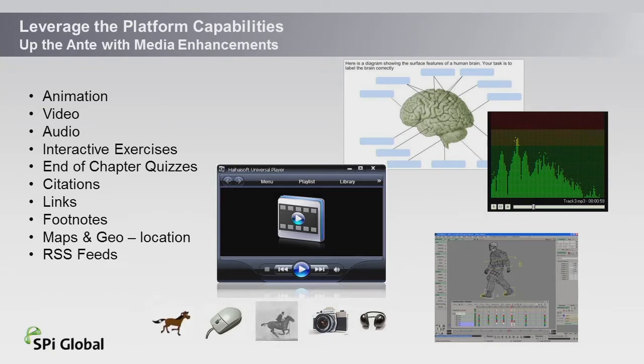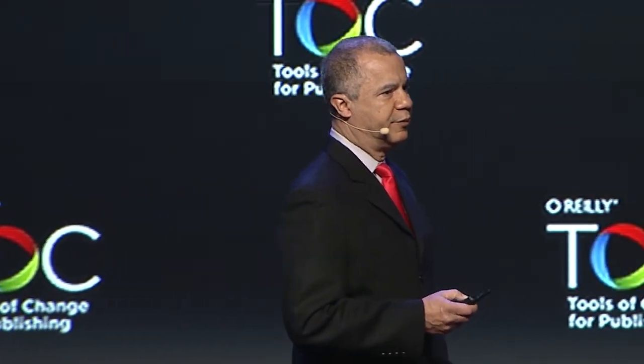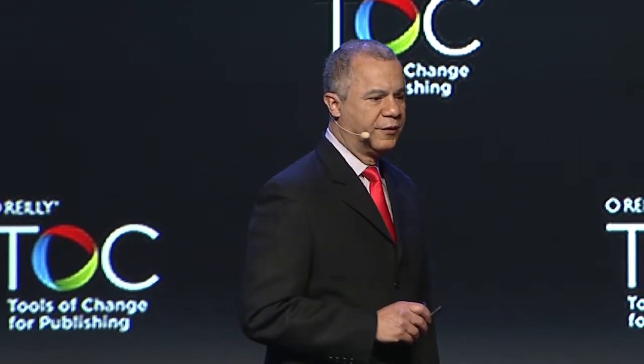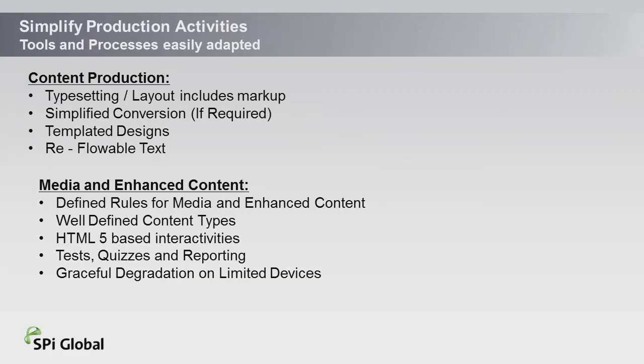If you're in the educational business — in-chapter exercises, quizzes, live links, citations — we're actually working on projects that have geolocation as part of the reading material, as part of the book. Believe it or not, embracing EPUB3 or HTML5 in your organization gives you the opportunity to simplify your production activities. It gives you a target to shoot at, so that all of the things you normally have to do — typesetting, layout, conversion — can be squeezed into a different, more economical workflow.